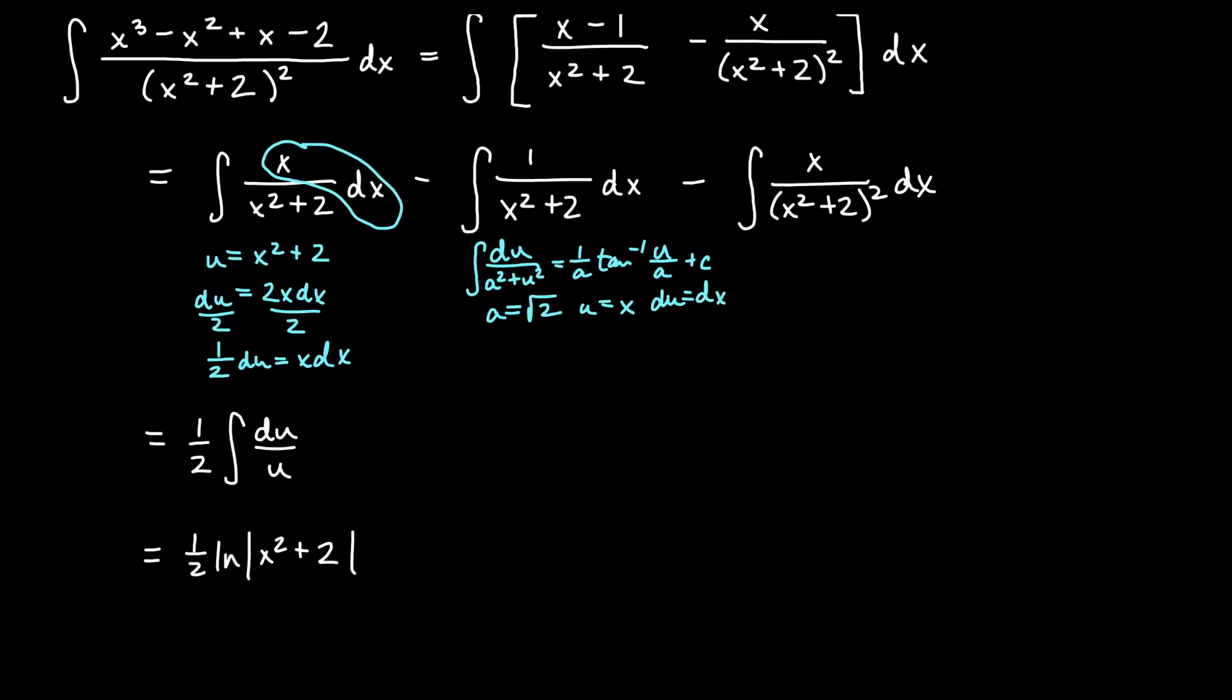So then this one becomes minus the integral of du/(a² + u²). We go ahead and complete that. That will give us -1/a which is -1/√2. You can rationalize if you want; I'm probably not going to do that.